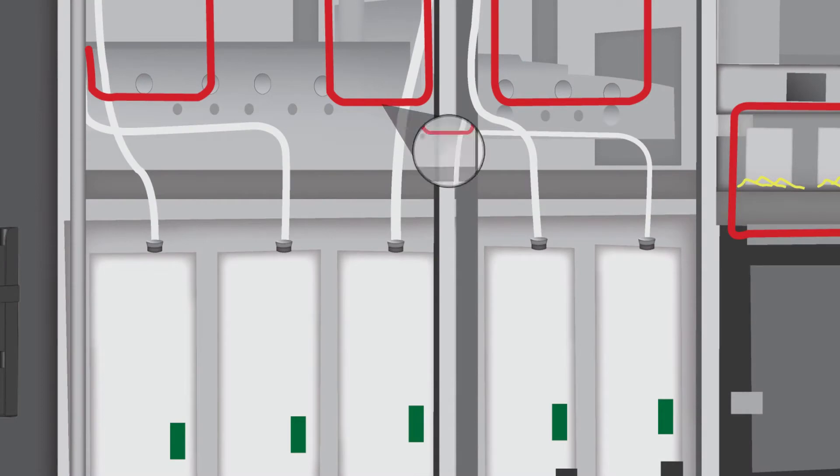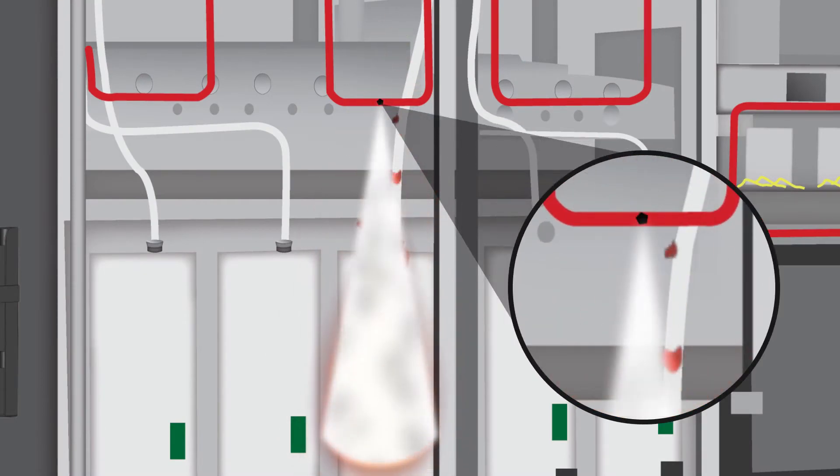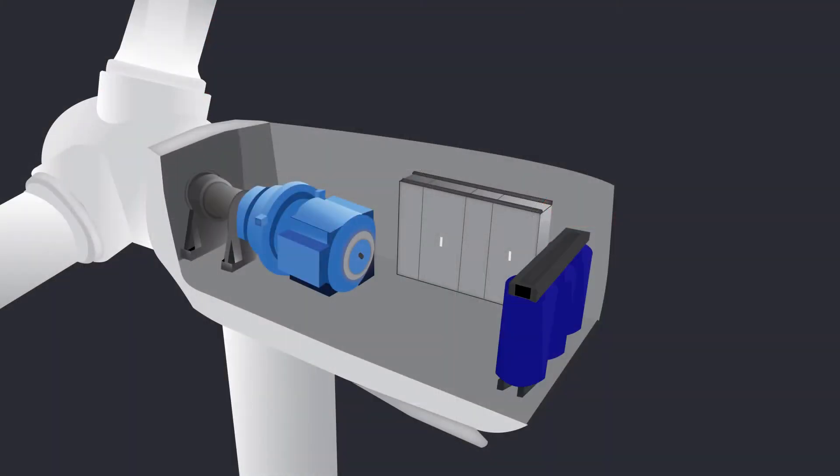The direct release system delivers the suppression agent through the burst hole and is ideal for the turbine's enclosed environments like the control panels and capacitor cabinets.